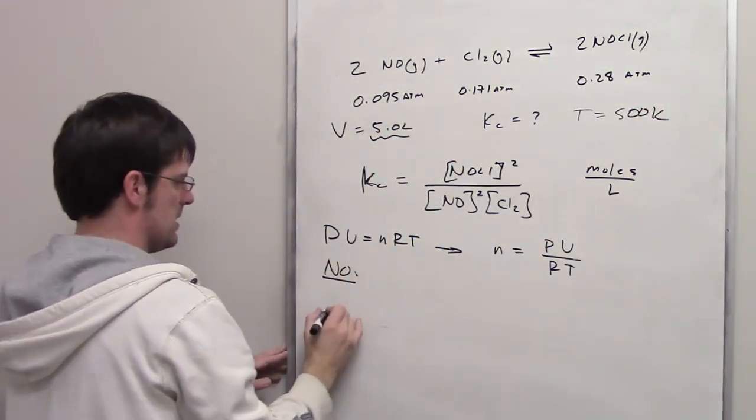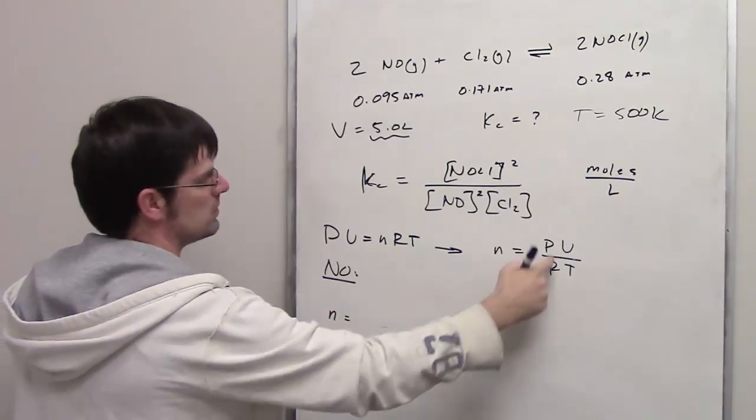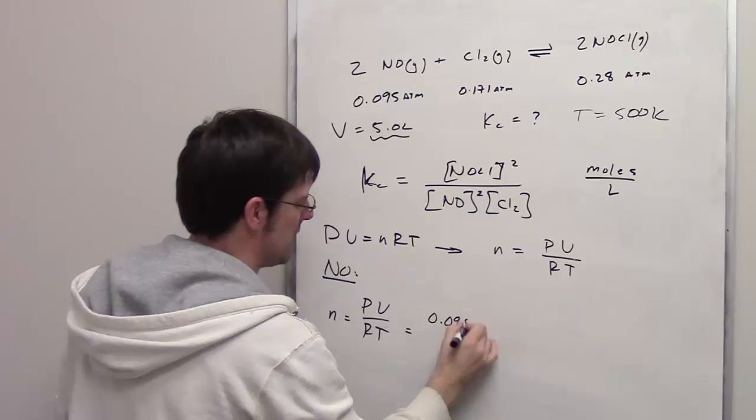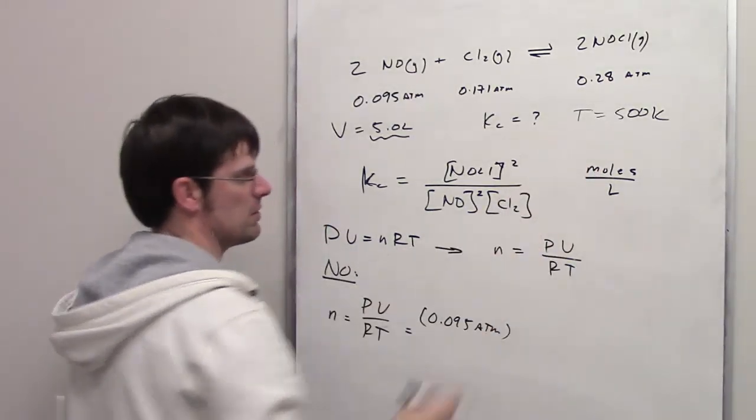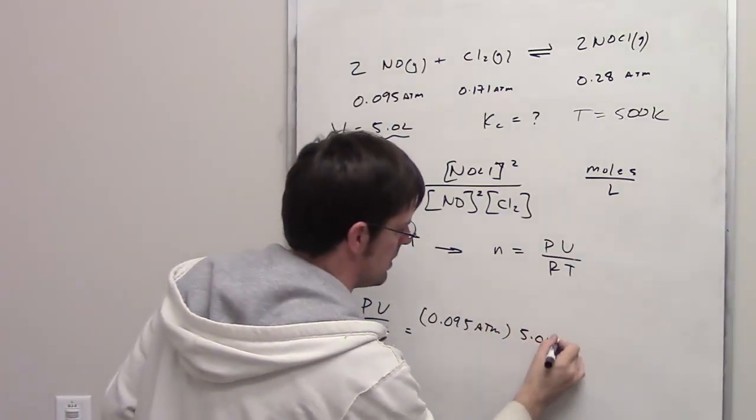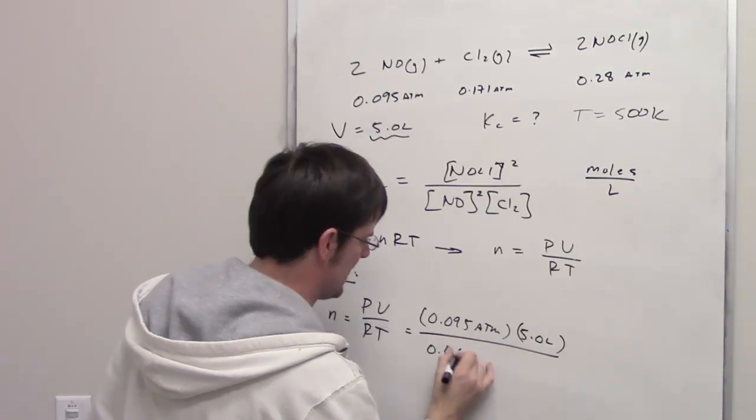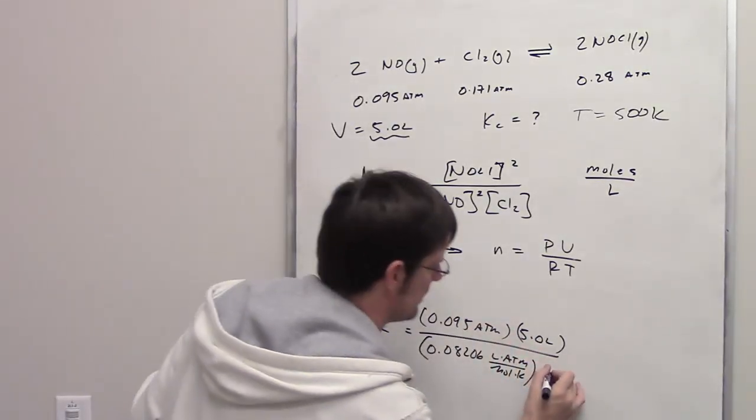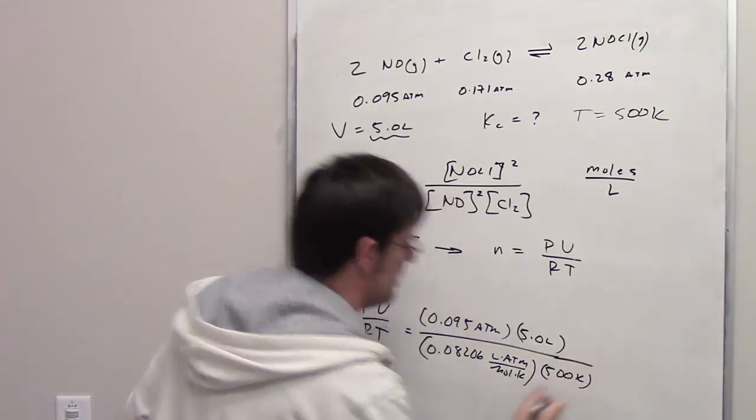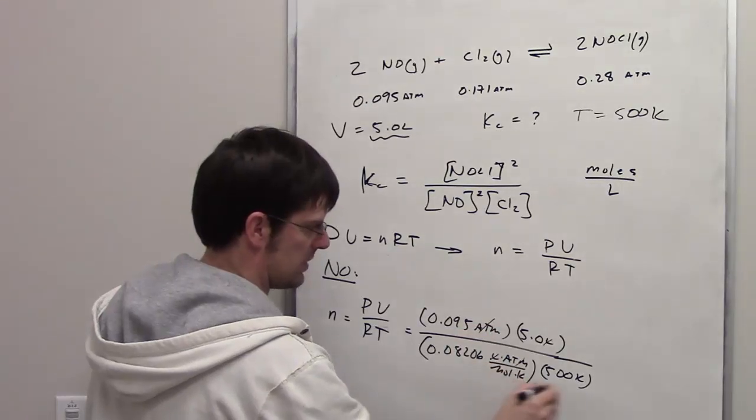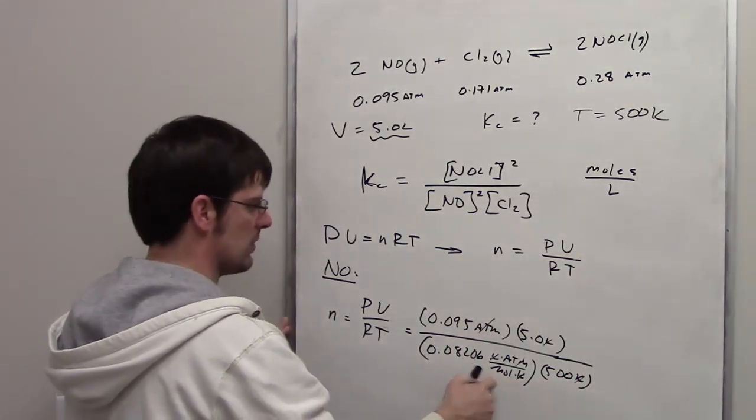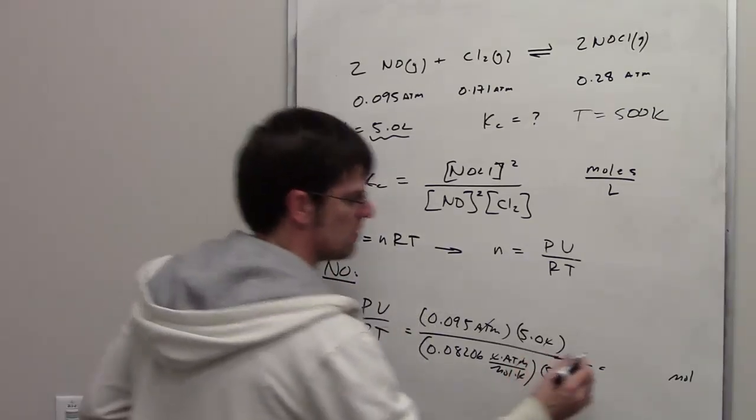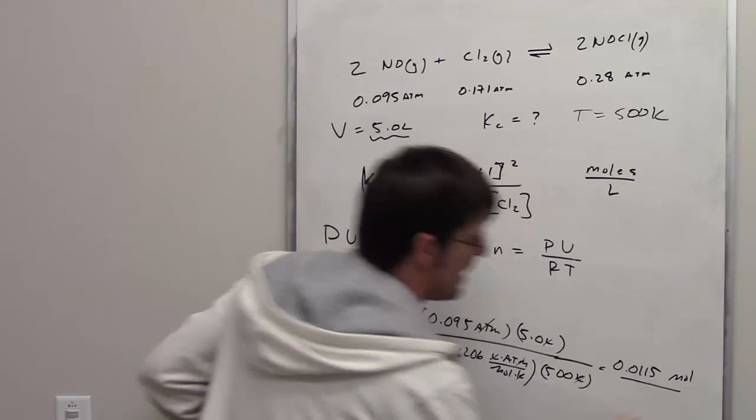Let's go ahead and do that for the first gas, NO. So the number of moles of NO is going to equal PV divided by RT. Its pressure is 0.095 atmospheres. Its volume is 5 liters. R is going to be equal to 0.08206 liter atmospheres per mole Kelvin, and then temperature is 500 Kelvin. The liters cancel each other out, the atmospheres cancel each other out, the Kelvins cancel each other out, and I'm left with moles in the denominator of the denominator, which is in the numerator. For NO, that comes out to be 0.0115 moles. That is the number of moles of NO.